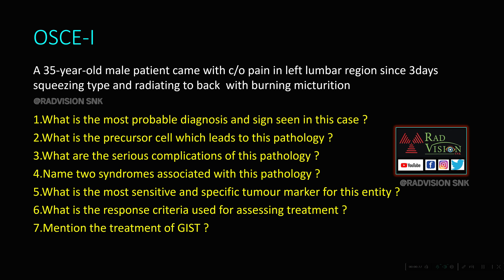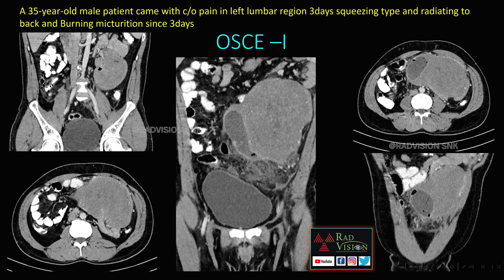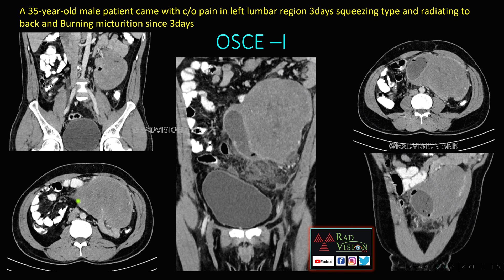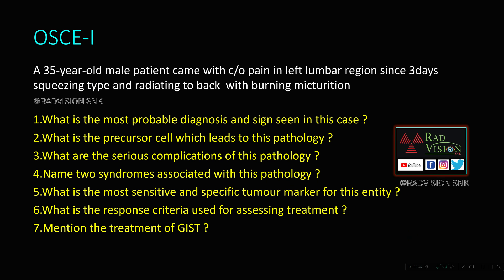Moving on to the findings — here you can see there is a lesion; this is a soft tissue lesion noted, predominantly growing in an exophytic fashion, abutting a part of the small bowel loop. There is necrosis in the medial aspect of the lesion, and free air noted within the necrotic area of the soft tissue lesion. There is also adjacent mesenteric fat stranding. This is a classical case of GIST.